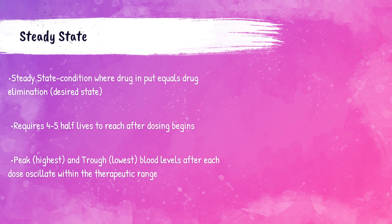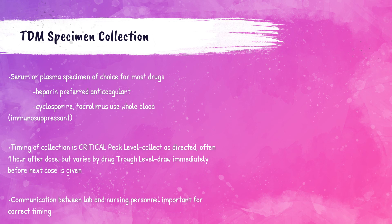The steady state of a drug is a desired state where the amount of drug put into the body equals the amount being eliminated by the body. It takes about four to five half-lives of the drug after dosing begins. When discussing medications, the terms peak and trough levels are talked about frequently. The peak level of a medication is where the highest level of drug is in the body, and this varies between each drug type. The trough level of a medication is the lowest amount of drug in the body. A serum or plasma sample is usually sufficient for most drugs, however whole blood must be used for cyclosporine and tacrolimus tests.